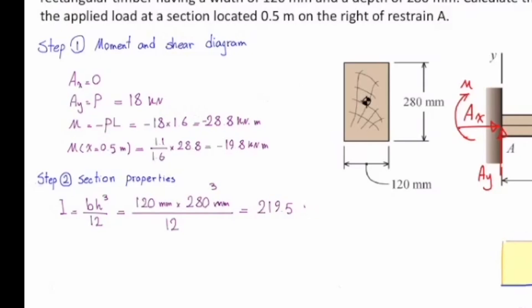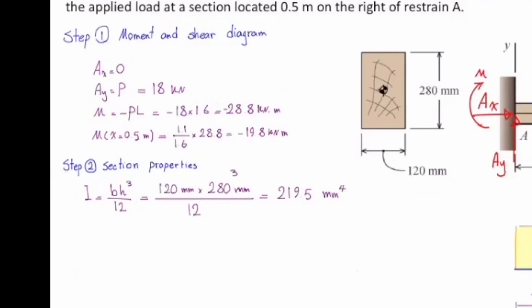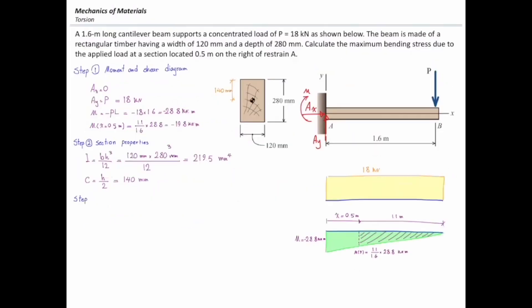The other parameter that we need to determine here is C. C would be the farthest distance in this section from centroid. And because the section is symmetric, it doesn't matter if you are looking for the maximum tension stress or maximum compression stress. That would be simply half of height of the section, which is 140 millimeters.